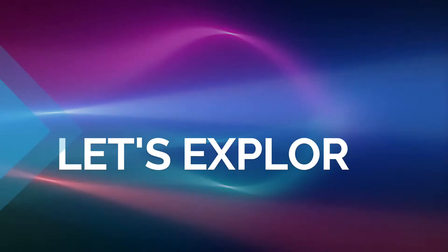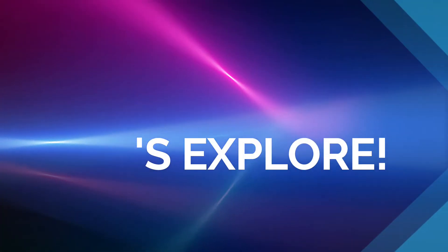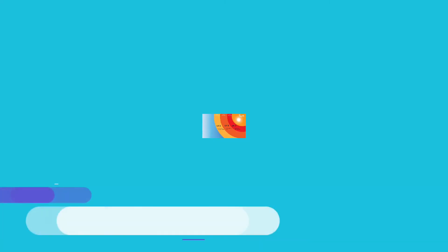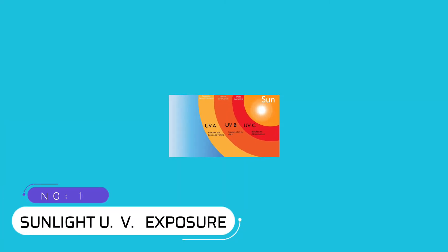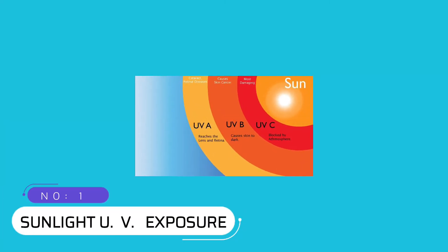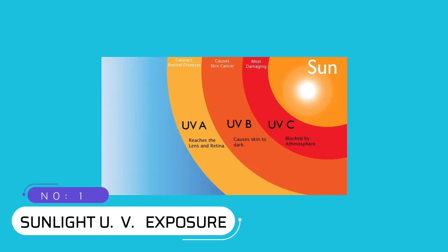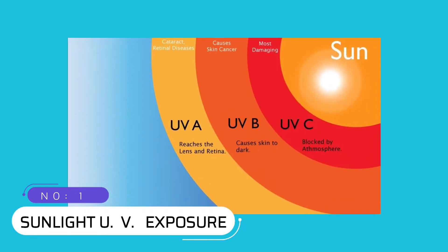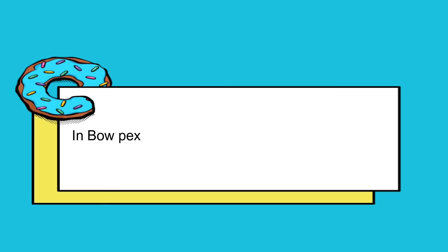Number 1: Sunlight UV Exposure. In BioPEX, UV doesn't affect at all. But in SuperPEX, UV light increases the chlorine effects.